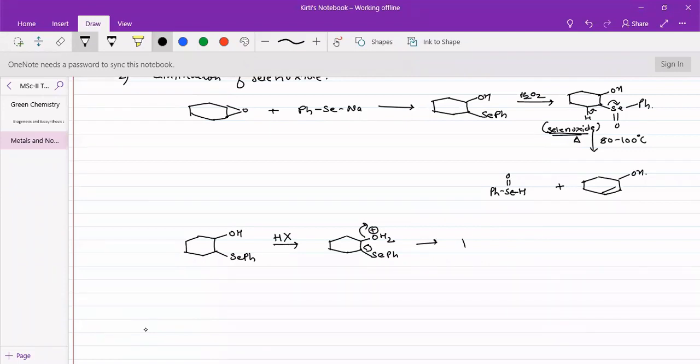Instead of alpha-beta unsaturated alcohol, this will undergo protonation to form a good leaving group. There can be formation of cyclohexene instead of using a proton from here, we will be using the proton from the other side of the carbon.